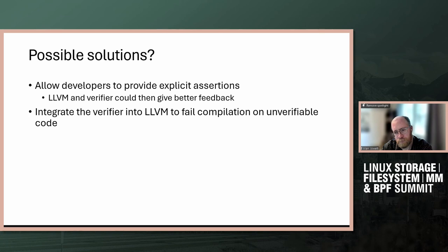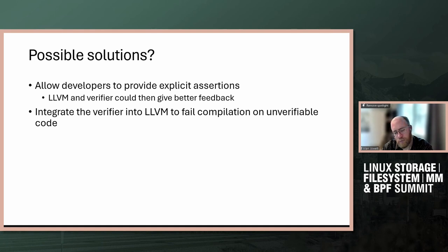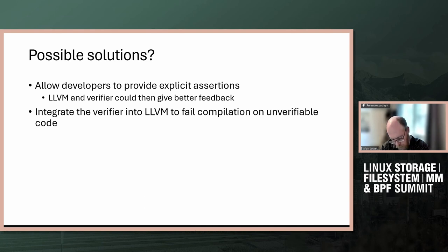Which verifier would you integrate with into the compiler — the kernel verifier or prevail? I suspect neither fits into the LLVM infrastructure so they cannot be part of the compiler. If the goal is to get feedback to the user as soon as possible during program build time, then we can have whatever tool running right after compilation producing errors about whether it will load or not. It's really about how to correlate the errors reported by whatever verifier back to the source code to speed up the write-compile-verify loop.